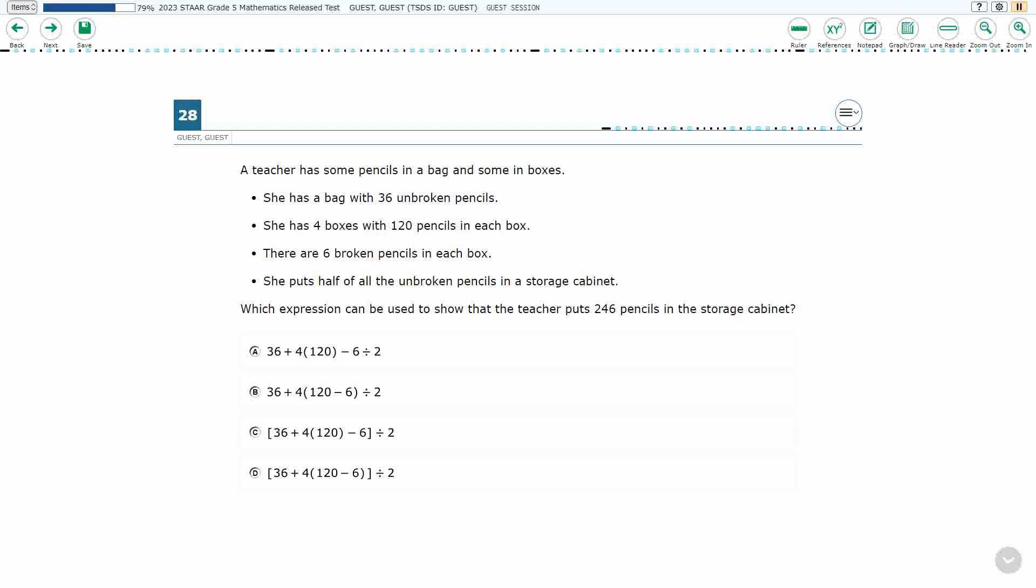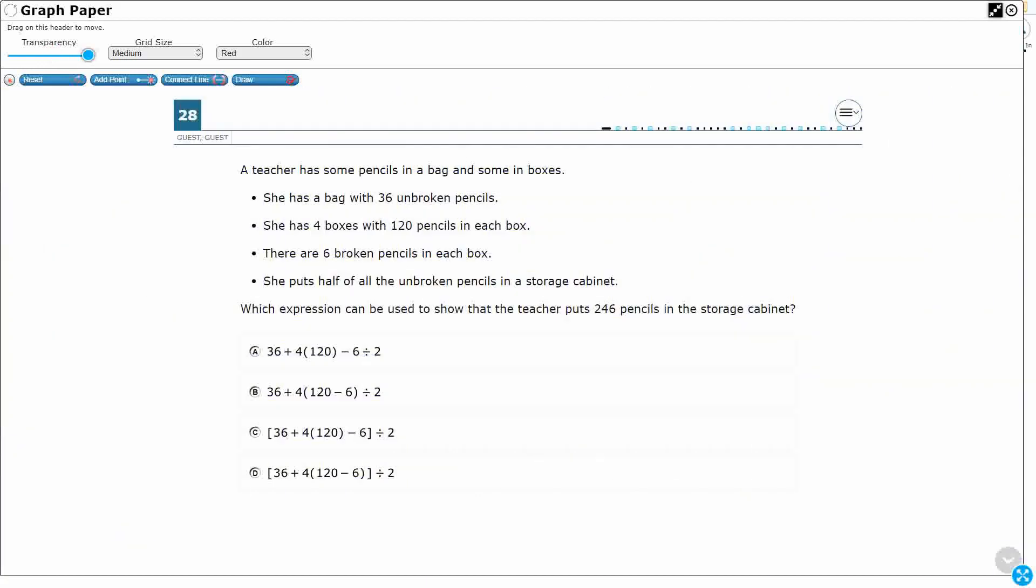Alright, so the teacher has some pencils in boxes in a bag and we've got to create an expression here. Look at A, B, C, and D. I see parentheses, I see parentheses and brackets. So what I want to do here is try to create my own expression from these clues first and then match it up.